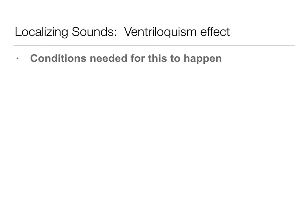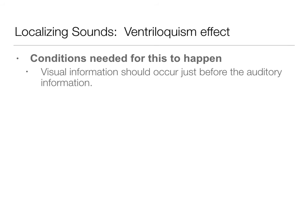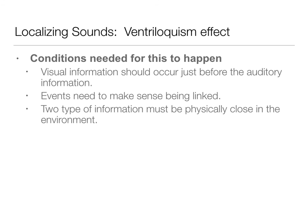For the ventriloquism effect to take place, the visual information should occur just before the auditory information. It also needs to make sense that these things are being linked — your brain wants the simplest solution. If it doesn't make sense that the sound is coming from there, the effect is less likely. Like — she can't make a foghorn sound; that's not a sound a human makes. Events really need to make sense, and they have to be physically close in the environment. If the speakers are in the other room, you won't perceive it as her talking and won't get the effect.